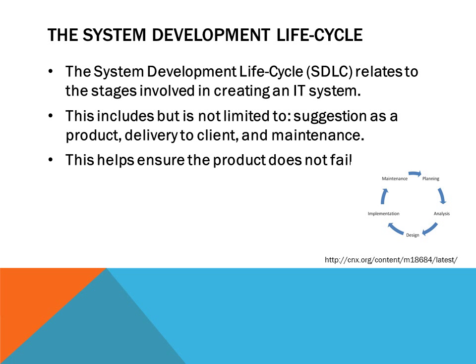This helps ensure the product does not fail. The graphic below shows a five-step process that includes planning, analysis, design, implementation, and maintenance. However, we're going to be looking at a six-step process for our IB Diploma. The graphic shows it's a giant circle, so it never really ends.